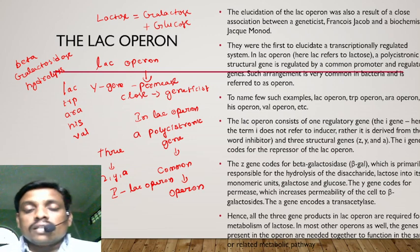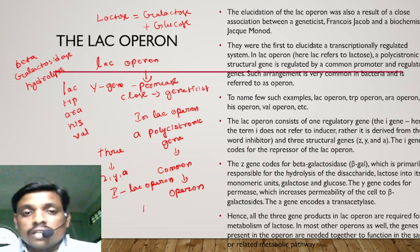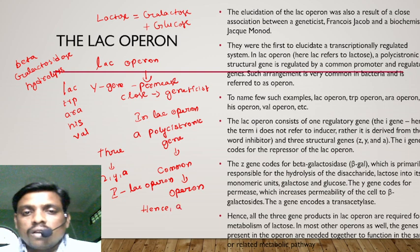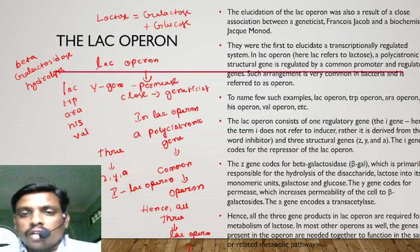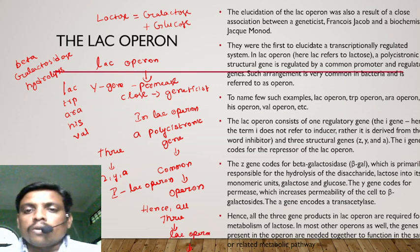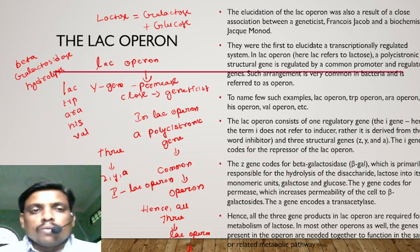Without permease, permeability cannot be increased. The A gene encodes transacetylase, which helps in acetylation reactions. Acetylation reactions are very important in this process. Hence, all three gene products in the lac operon are required for metabolism of lactose.